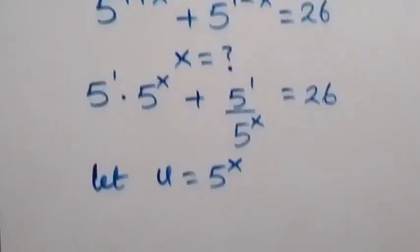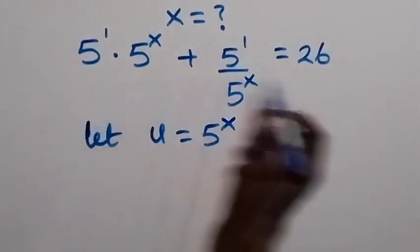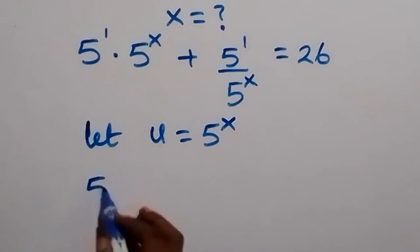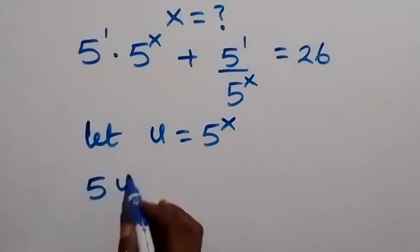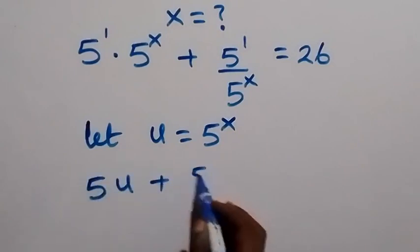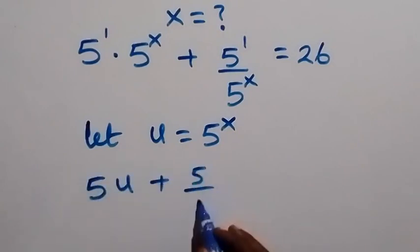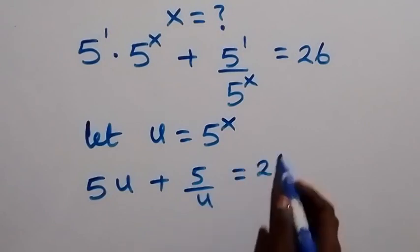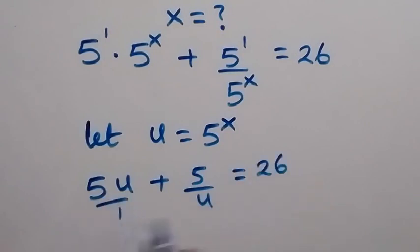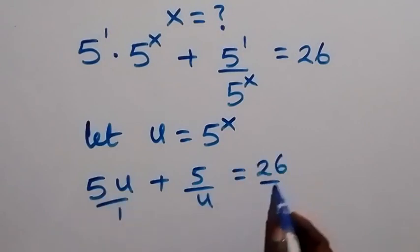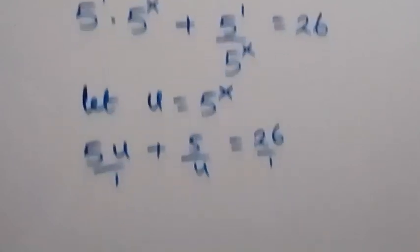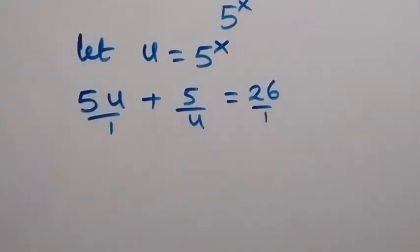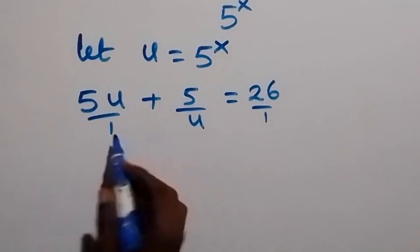Then from here, we can write this equation now. This will be 5u plus 5 over u, equals to 26. Then, we have this over 1 and this over 1, with common denominator u. We can clear the fraction and multiply through by u.